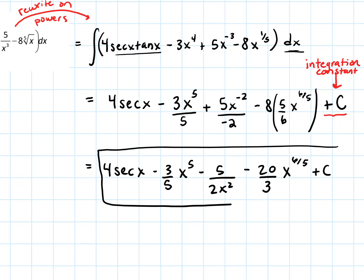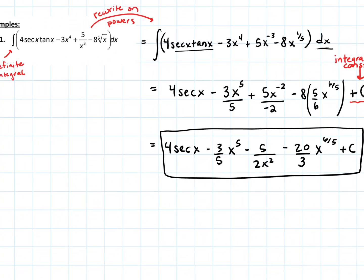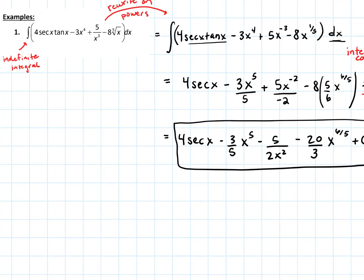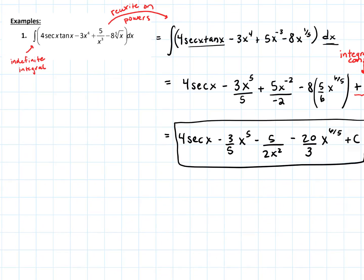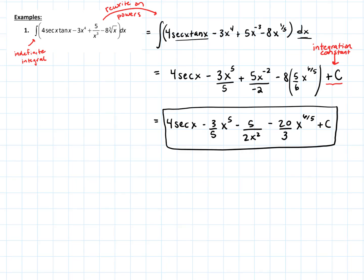Let's just clean it up: 4 secant x minus three-fifths x to the fifth minus five over 2x squared minus twenty-thirds x to the six-fifths plus C. That is the integral of the function I started with. You can always check by taking a derivative to see if you get back the original function — and we would.